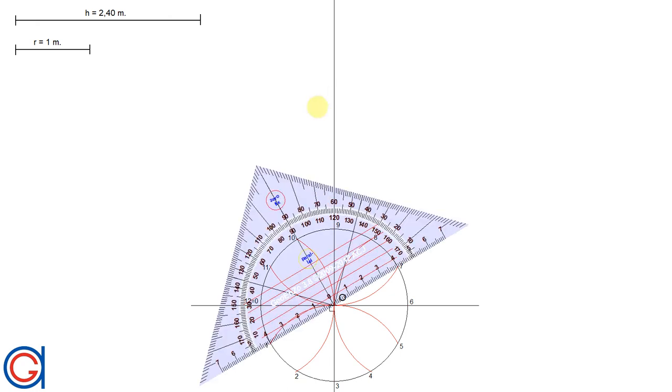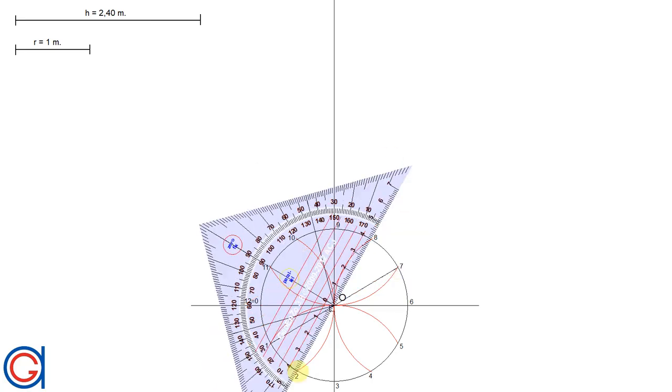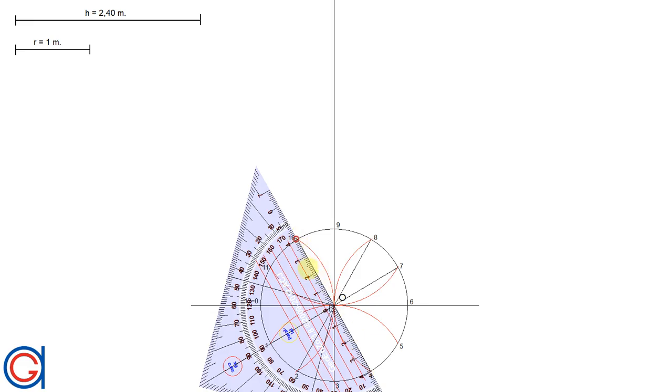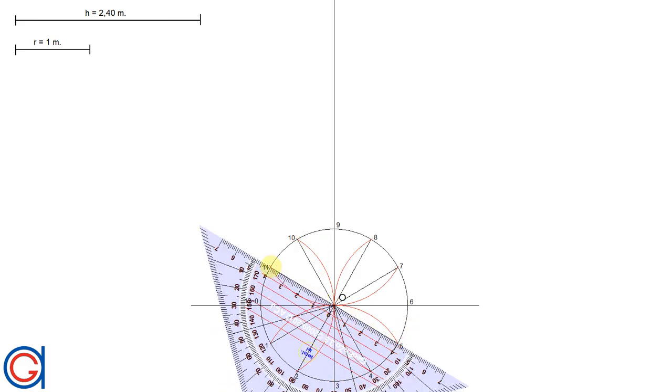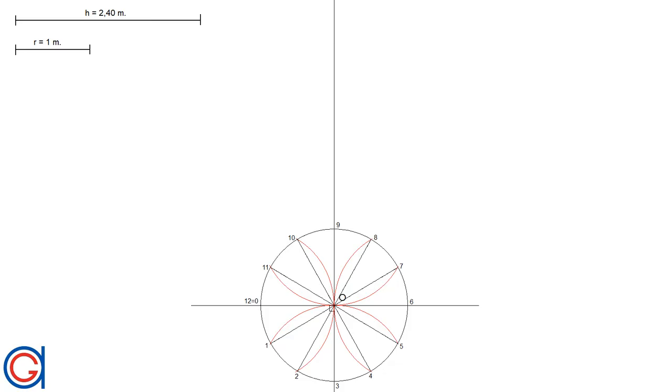To finish the plan view, we have to draw four remaining diameters from 1 to 7, from 2 to 8, from 4 to 10, and from 5 to 11, as can be seen here. Each radius of these diameters represents a step of the spiral staircase.